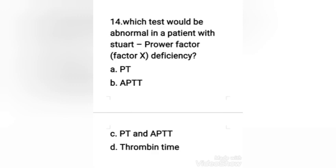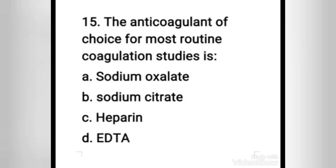Next question: the anticoagulant of choice for most routine coagulation studies is — sodium oxalate, sodium citrate, heparin, or EDTA? The right answer is option B, sodium citrate. Factors 5 and 8 are more labile in sodium oxalate. Heparin neutralizes thrombin and EDTA inhibits thrombin action on fibrinogen, so these are not used for routine coagulation studies. The anticoagulant of choice for most routine coagulation studies is sodium citrate.